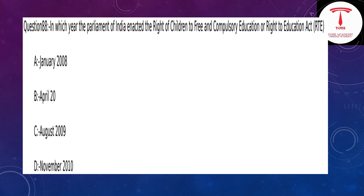In which year did the Parliament of India enact the Right of Children to Free and Compulsory Education, or Right to Education Act? The answer is August 2009.